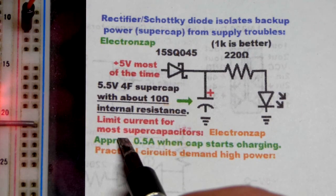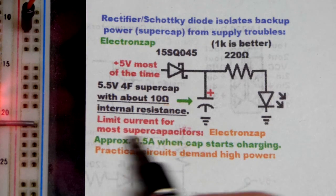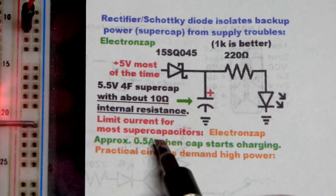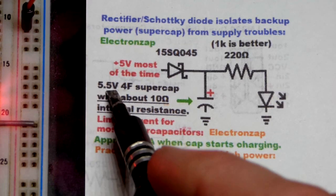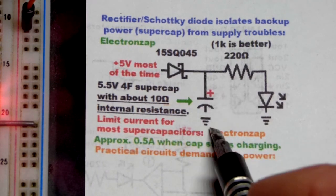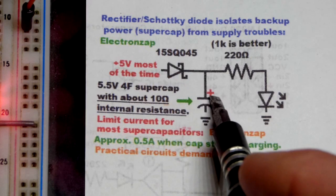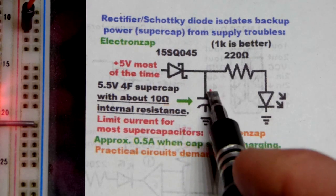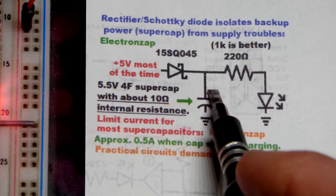So I did add this note here. Make sure you limit current for super capacitors. This goes for batteries and stuff too. And you also have to limit the voltage to a safe amount. In this case, it's a 5.5 volt super capacitor. So we can have 5 volts right there. But a little bit more series resistance probably would have been okay.